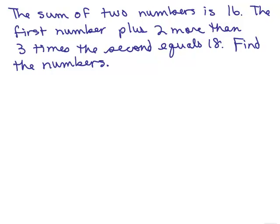Here's the next problem. The sum of two numbers is 16. The first number plus two more than three times the second equals 18. Find the numbers. Again, we have a situation where we're looking for a first and a second number. Why don't you put this on pause and try to write the two equations.